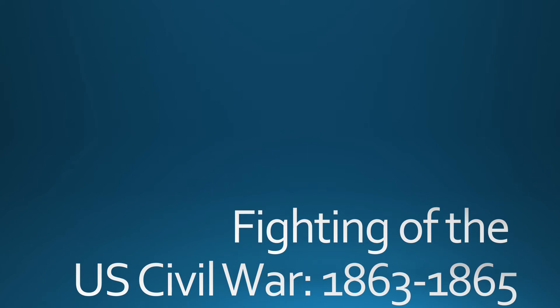This is the last of the three-part series on the U.S. Civil War. We started with a look at the causes of the Civil War from the early to late 1850s into 1860. Last class, we took a look at some of the fighting, including the Union versus the Confederacy and how they stacked up against one another. Today we're going to wrap up the fighting and talk about some serious developments that occur throughout the Civil War.